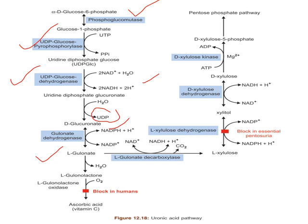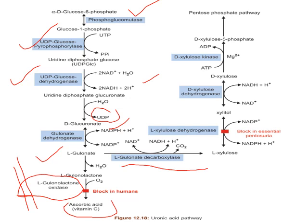L-gulonic acid is the precursor for ascorbic acid, that is vitamin C. Vitamin C synthesis occurs in animals capable of synthesizing it. However, the specific enzyme responsible — L-gulonolactone oxidase — is absent in human beings, other primates, and guinea pigs, which is why vitamin C cannot be synthesized in the human body from L-gulonic acid. L-gulonic acid is also oxidized and decarboxylated to the pentose L-xylulose by the enzyme L-gulonate decarboxylase.